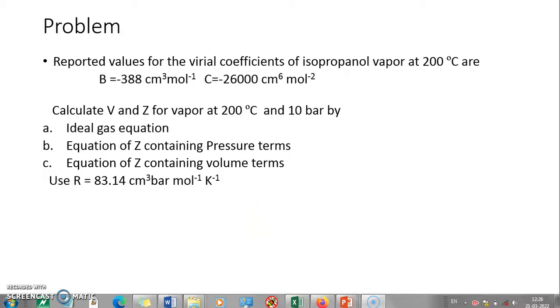In previous session, we have seen the application of Virial Equation of State and how various expressions can be used to find the value of Z and correspondingly the value of V, that is volume. Here is the problem which talks about isopropanol vapor at 200 degree Celsius. We are supposed to find V and Z for these vapors at 10 bar and 200 degree Celsius.